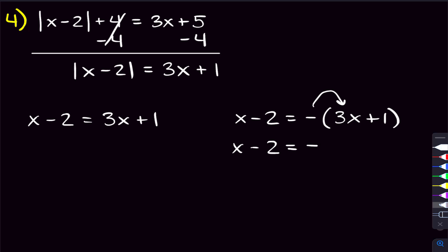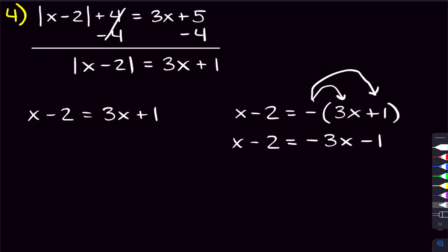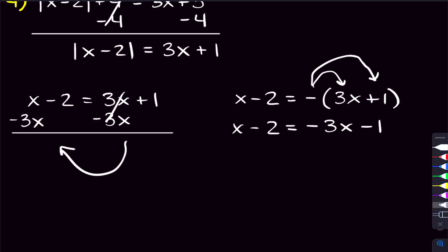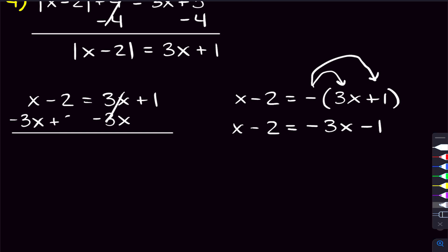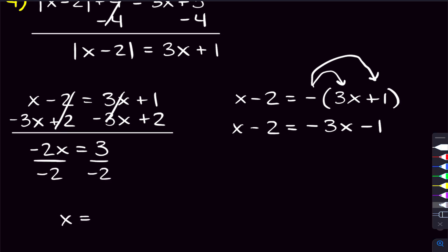We distribute the negative through to get negative 3x minus 1. Now we solve both equations. For the left equation, we subtract 3x and add 2 on both sides, leaving negative 2x on the left and 1 plus 2 equals 3 on the right. Dividing by negative 2 gives x equals negative 3 halves.